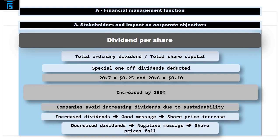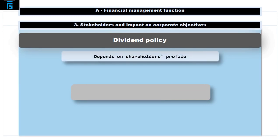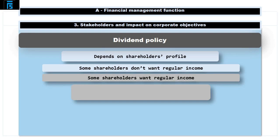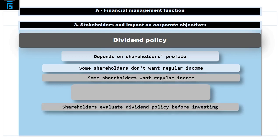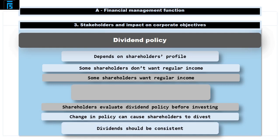This would cause share prices to increase. If dividend rates were to fall, this would send a negative message to shareholders indicating that profits are reducing and the company does not see the situation improving in the foreseeable future, which would cause the share price to fall. A lot of planning and forecasting goes into the dividend policy. An organisation's dividend policy depends on its shareholders' profile. Some shareholders don't want to receive a regular income, instead wanting the money to be reinvested in the organisation, which will increase the value of their shares. Changes in dividend policy can cause shareholders to sell their shares and invest elsewhere, which can cause share prices to fall and leave the company open for a hostile takeover.